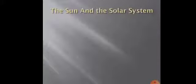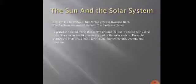Now, we will study about the sun and the solar system. What is a solar system? The sun is a huge ball of fire which gives us heat and light. The earth moves around the sun. The earth is a planet where we live.